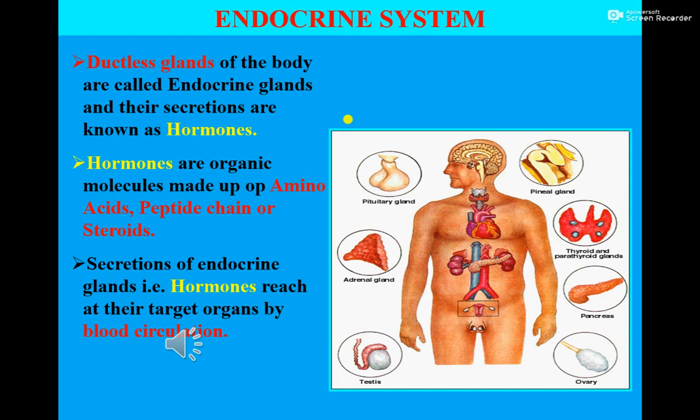On the other hand, ductless glands do not possess any kind of duct as found in the exocrine gland. Ductless glands pour their secretion directly into the bloodstream and their secretions reach their target organs via blood circulation. Secretions of these ductless glands, i.e. endocrine glands, are known as hormones. Hormones are organic molecules made up of amino acid, peptide chain, or steroids.